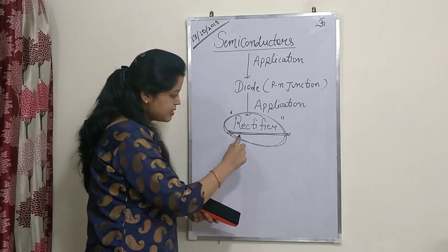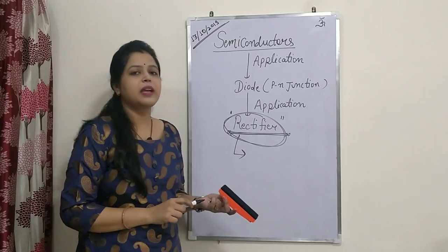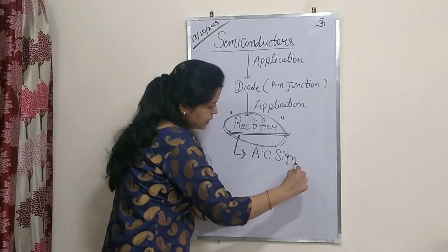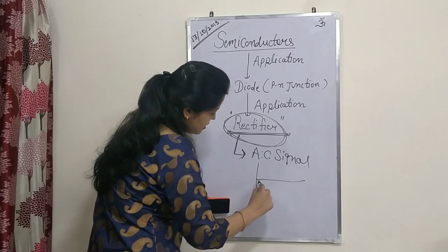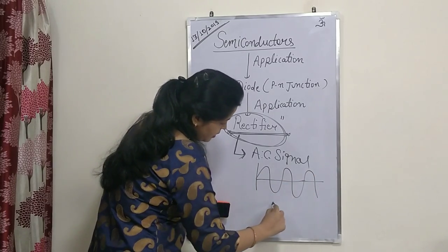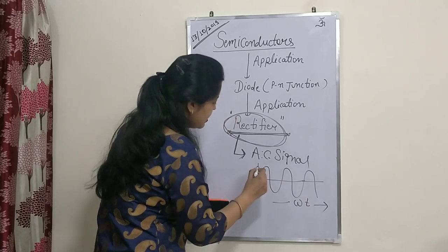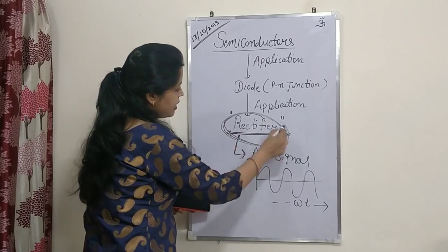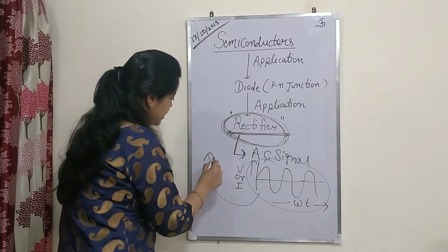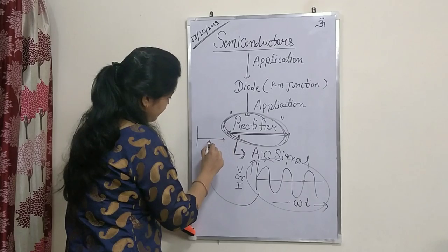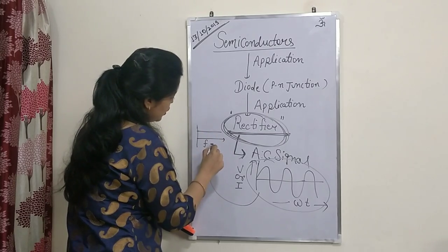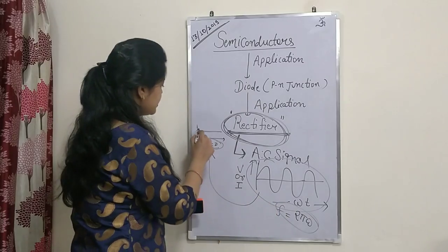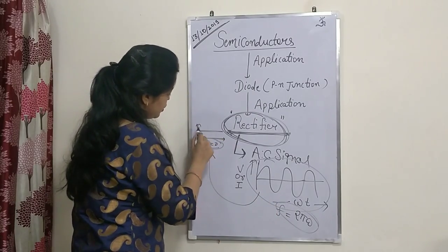A rectifier is basically an electronic device which is used to convert any AC supply into DC supply. Whatever AC signal we have — represented at academic level as a sine wave where the x-axis is omega t and the y-axis is voltage or current — with the help of a rectifier, this AC signal can be converted into a DC signal. Here we will have some frequency in terms of 2π omega, while for a DC signal the frequency will be zero.